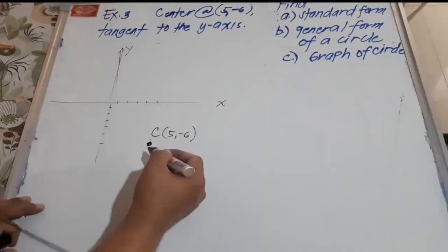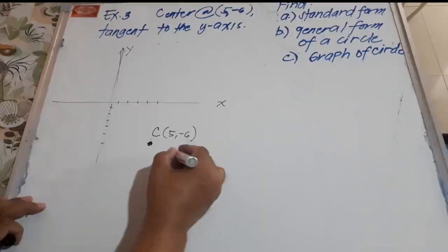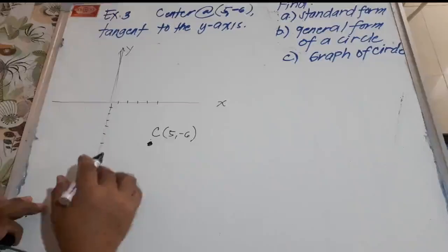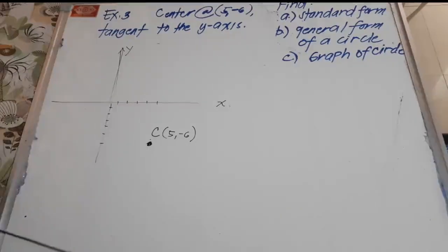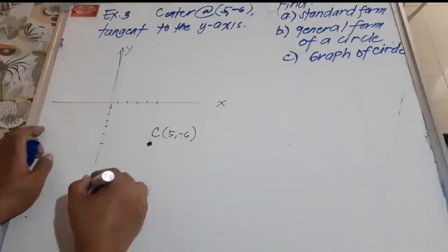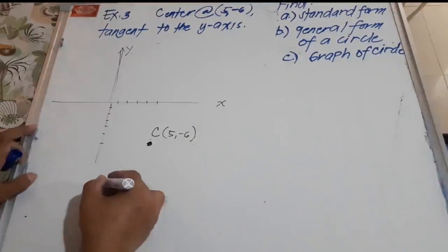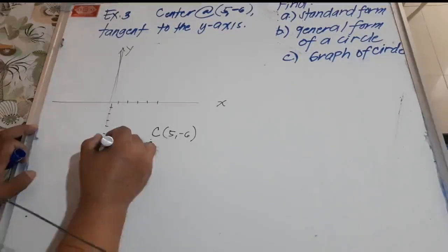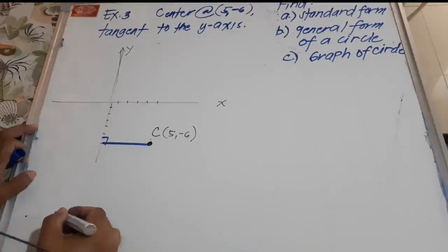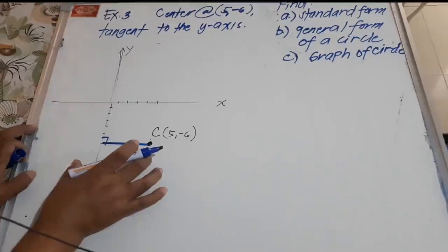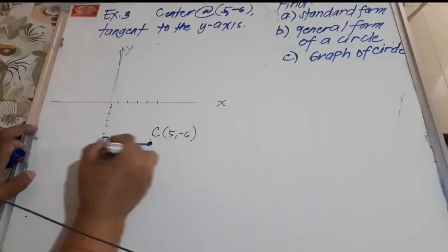Since the circle is tangent to the y-axis, it will touch the y-axis like this. The radius must be perpendicular to the y-axis, because the y-axis is our tangent line. The circle is positioned here, and the radius is perpendicular to the tangent line. Therefore, the length of the radius is just this horizontal segment connecting the point of tangency and the center of the circle.